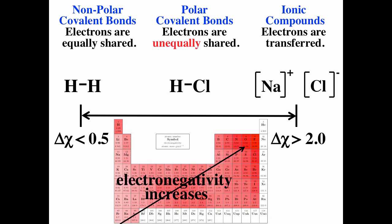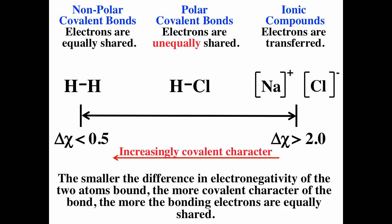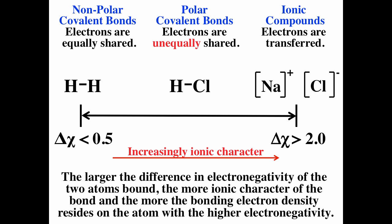As you go up to the right on the periodic table, electronegativity increases — fluorine is the most electronegative. We can think of the bonding continuum: going from right to left increases covalent character. The smaller the difference in electronegativity of the two atoms bonded, the more covalent character of the bond, and the more equally the bonding electrons are shared. As you go from left to right, you have increasingly ionic character — the larger the difference in electronegativity, the more the bonding electron density resides on the atom with higher electronegativity.